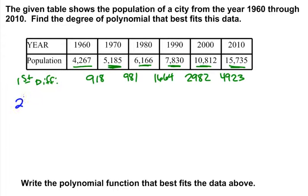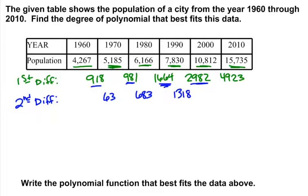We compute second differences — the differences between the first differences: 981 minus 918 is 63; 1664 minus 981 is 683; 2982 minus 1664 is 1,318; and 4923 minus 2982 is 1,941. These are still not equal, so we go to third differences.